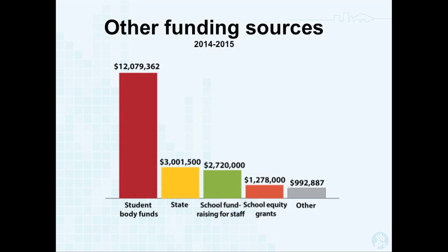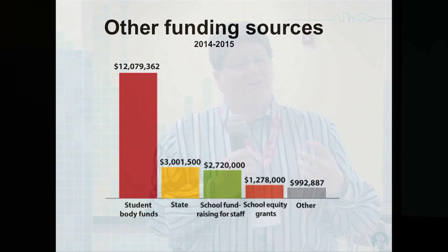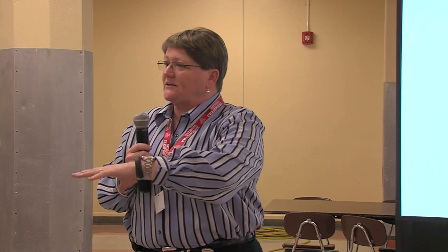Another funding source is student body funds — those are the individual bank accounts that principals have at each school. That's where money comes from parent donations to buy athletic equipment, or a PTA or foundation that wants to give $500 to buy uniforms for the volleyball team. Each of the approximately 80 sites has its own individual bank account managed by the school. They may also get a mini grant of less than $5,000 — like to buy laptops — and those are managed through the student body funds that give the principal a little bit of autonomy while still following district guidelines.